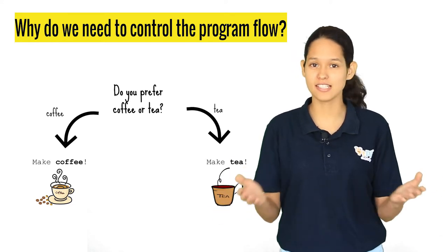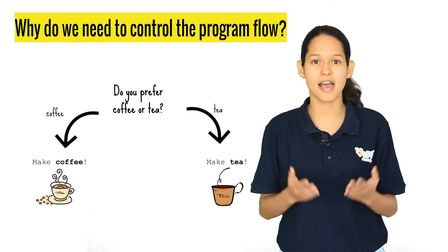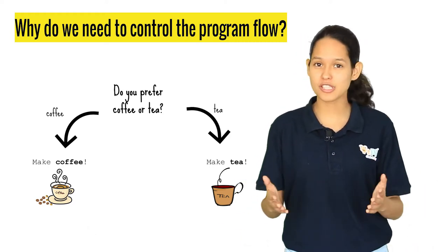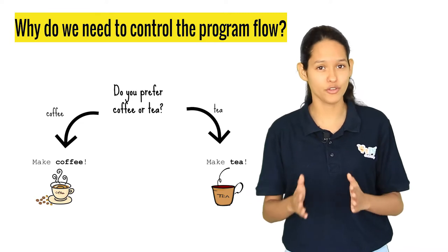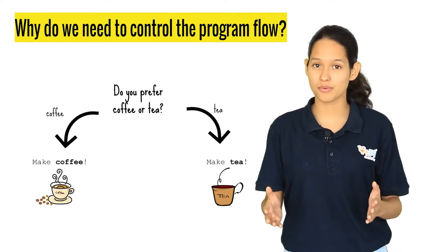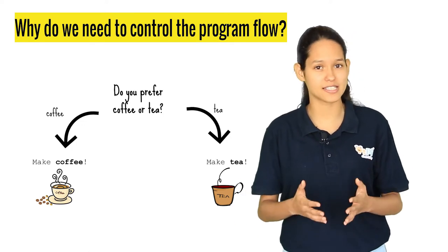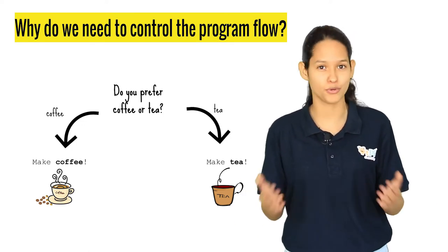After the user enters their preference, your program has to pick the right piece of code that needs to be executed. This means that if the user enters coffee, only the coffee making code is executed, otherwise the tea making code. This is how the conditional statement allows you to make a decision based on a condition in your program.